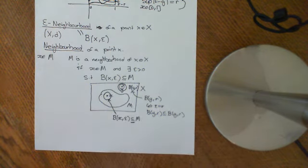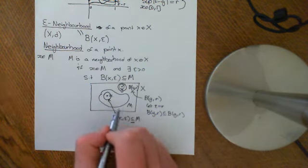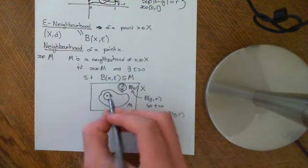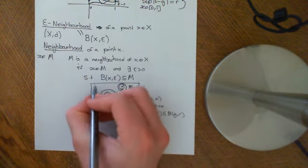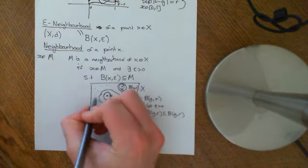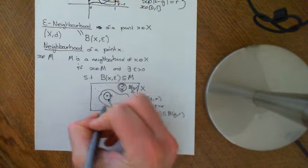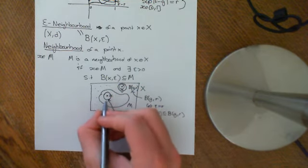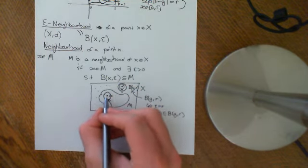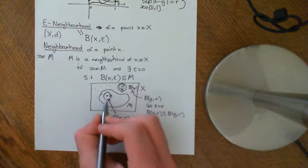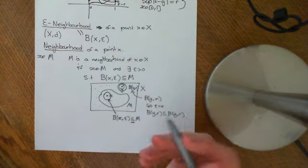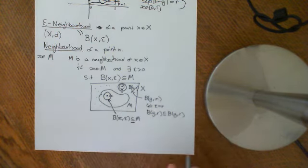Note that these sets could take on very strange forms. I could define M to be some region along with lots of other little points elsewhere, and that is still a neighbourhood because there is an epsilon neighbourhood of X contained within M.